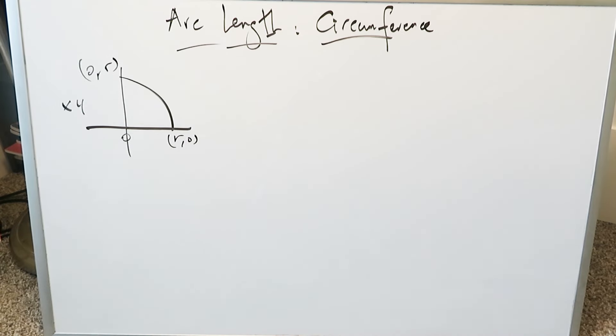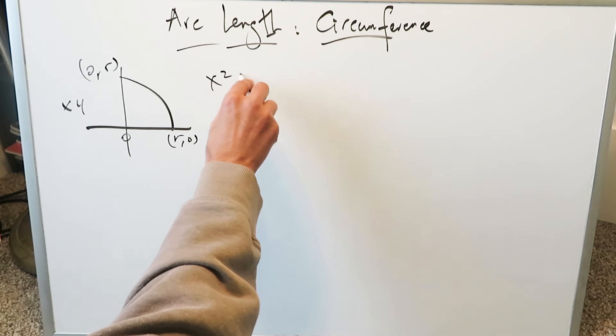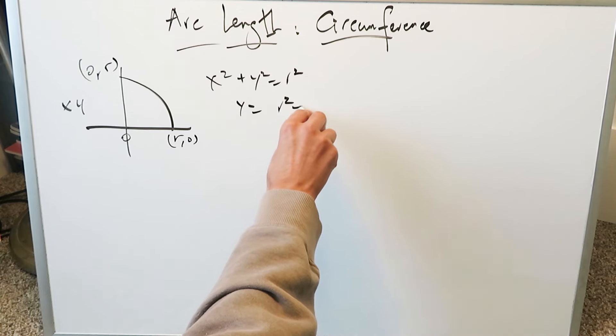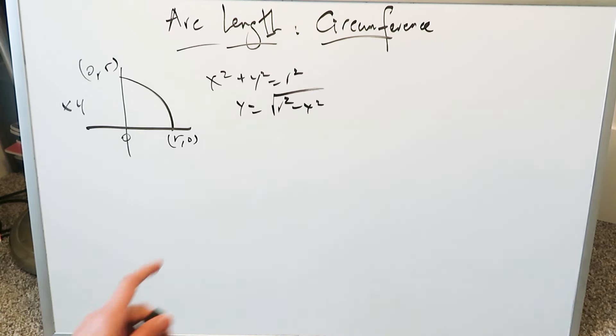But you need to have a function first. What's our function? It comes here from x² + y² = r². Y is equal to √(r² - x²).